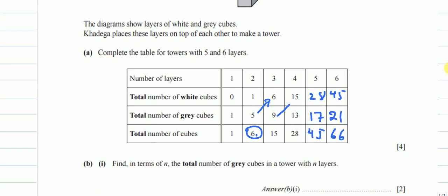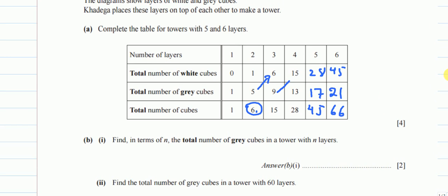For part B1, we need the total number of gray cubes in a tower with n layers. Since gray increases by 4 each time, we start with 4n. Checking against the first value: 4×1 = 4, but the first term is 1, so we subtract 3. The formula is 4n − 3.